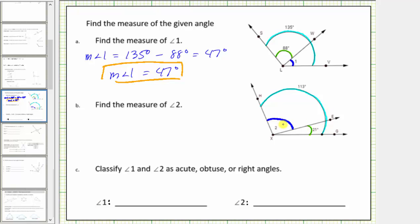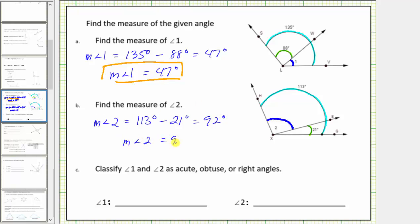From the diagram, the measure of angle two plus 21 degrees must equal 113 degrees. Therefore, the measure of angle two equals 113 degrees minus 21 degrees — the measure of the large angle minus the measure of the small angle — which equals 92 degrees. The measure of angle two equals 92 degrees.